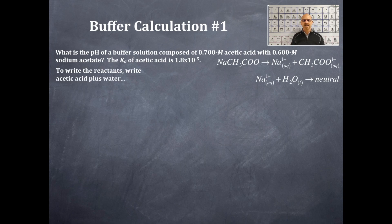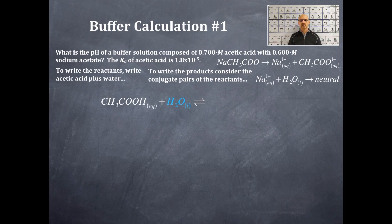So we're going to write the reactants of acetic acid plus water. That is written right here. Acetic acid plus water, and we have already talked about this being the example of a weak acid problem. So what we're going to do is we're going to write the conjugate pairs to the reactants to yield the products.